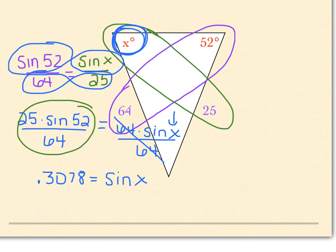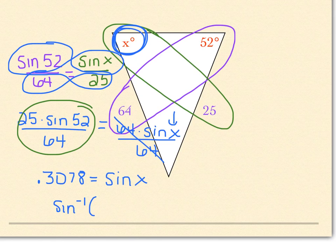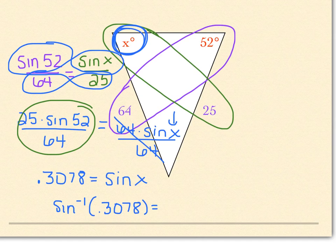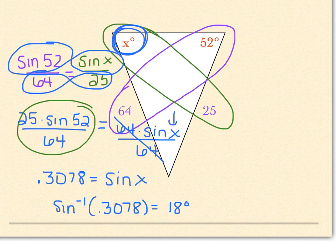Well, I would use inverse trig. So sine negative 1 of 0.3078 is equal to about 18 degrees. So the angle measure here would be about 18 degrees in this situation.